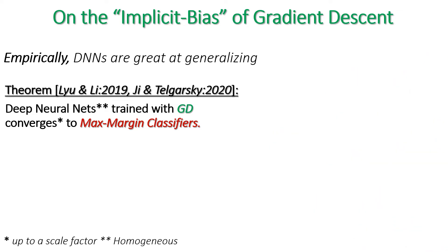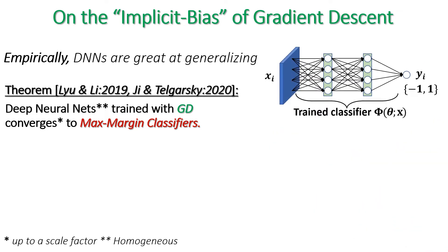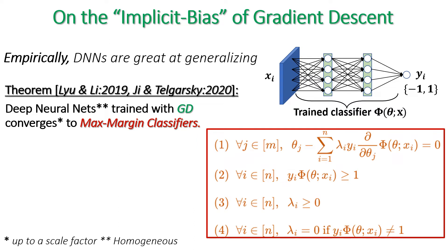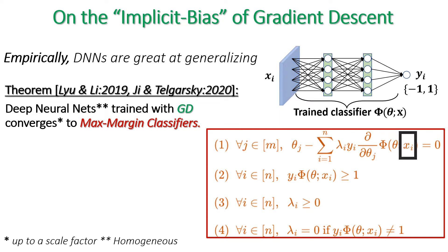More specifically, a binary classifier phi with parameters theta, trained with gradient descent on a labeled dataset {X_i, Y_i}, will converge to a solution of the following set of equations — also called the KKT conditions of a maximum margin problem. The lambda_i's are scalar KKT multipliers. Note that these equations relate the parameters of the model to samples from the training set.